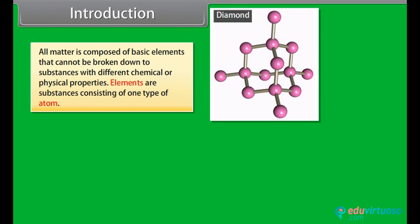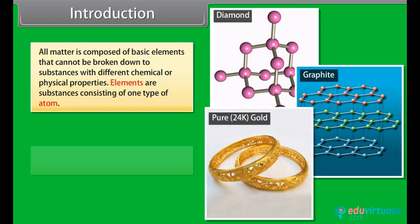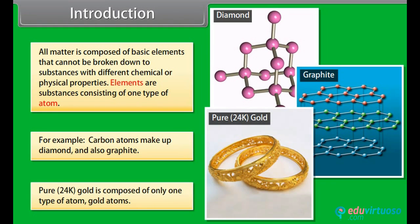All matter is composed of basic elements that cannot be broken down to substances with different chemical or physical properties. Elements are substances consisting of one type of atom. For example, carbon atoms make up diamond and also graphite. Pure 24 karat gold is composed of only one type of atom, gold atoms.